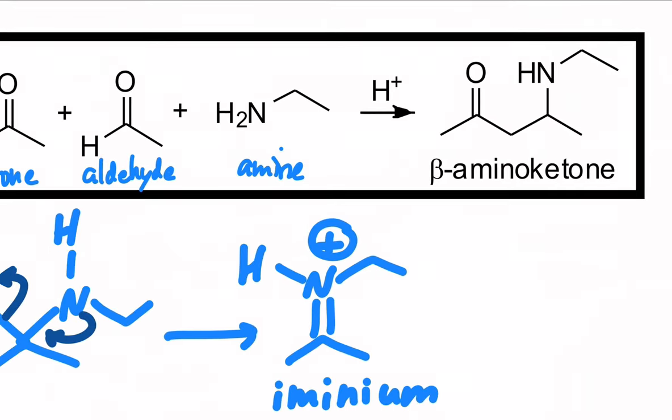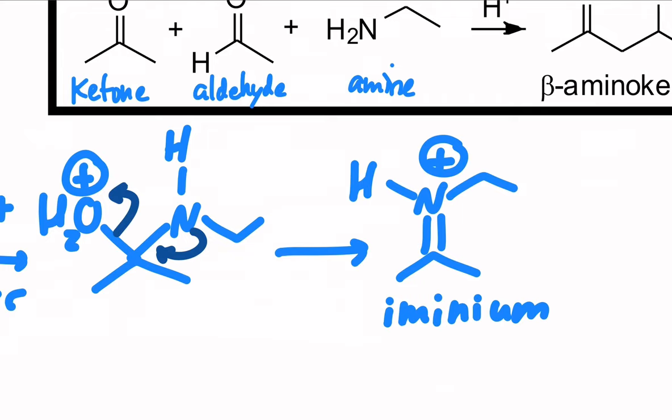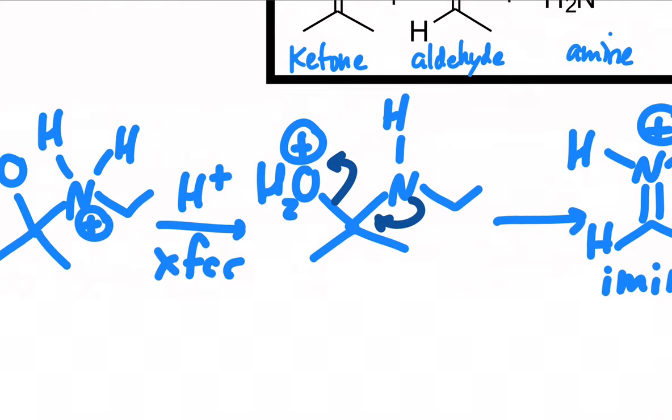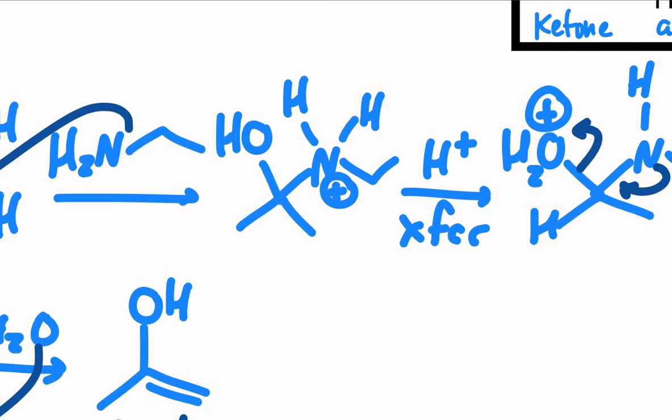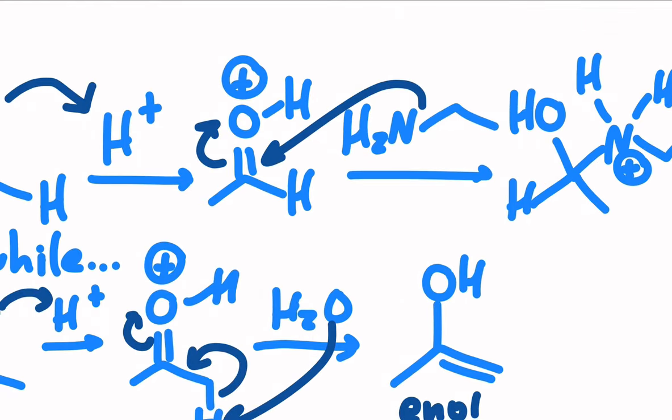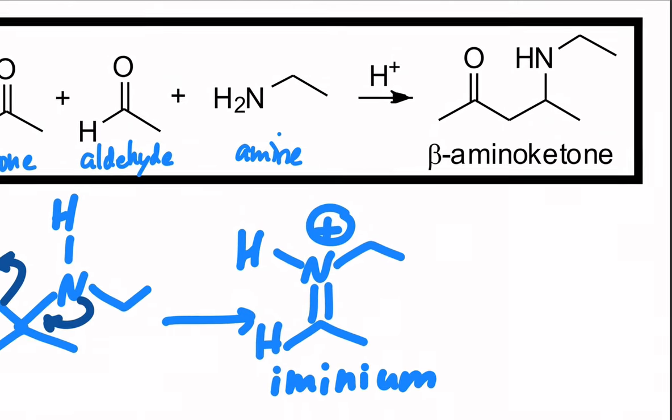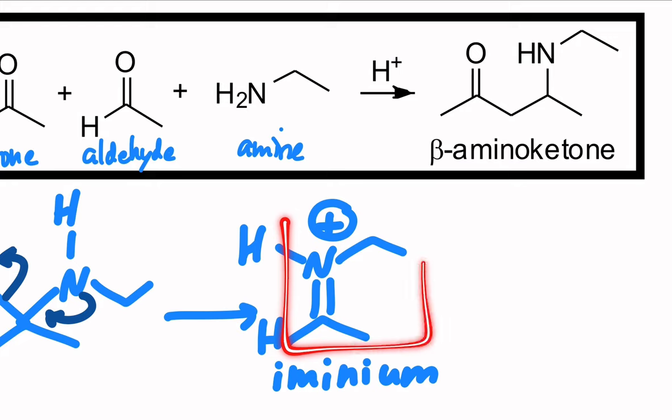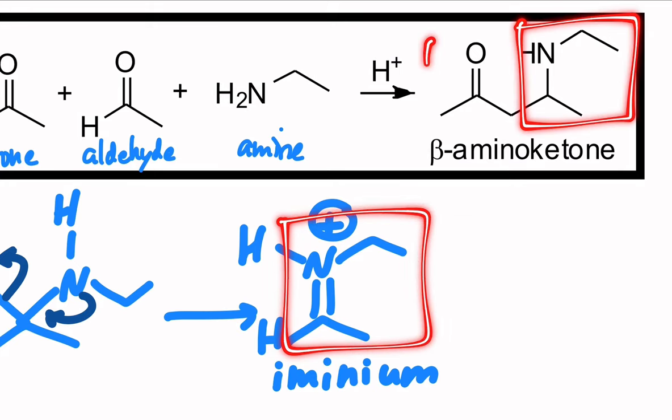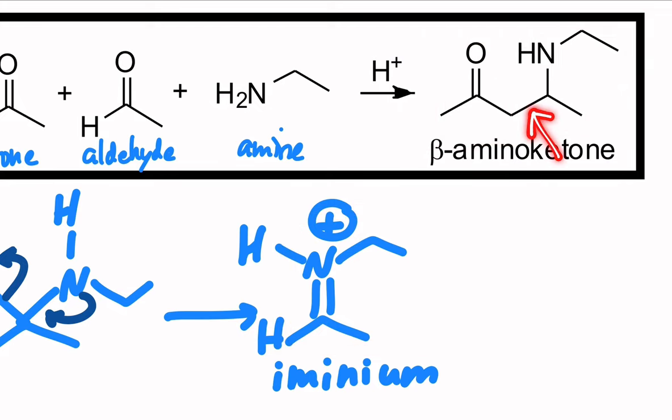And if I check this piece of our product, that must come from this iminium. Whoops, I'm just noticing I lost an H, didn't I? This used to be an aldehyde. So that iminium came from the aldehyde. There it is. So that iminium right here, that batch of carbons, becomes this batch of carbons. And obviously the ketone becomes this batch of carbons. So we need to make a new carbon-carbon bond right there.